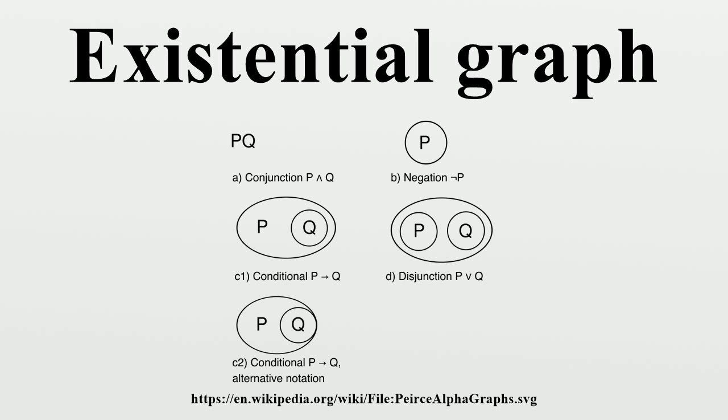Any subgraph P in node N may be copied into any node depending on N. Likewise, any subgraph P in node N may be erased if there exists a copy of P in some node ancestral to N.